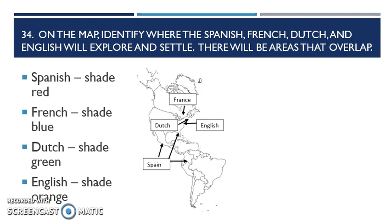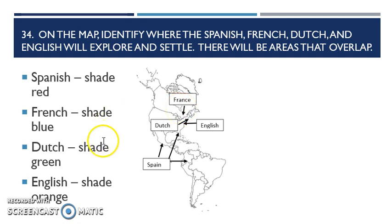Question 34 on the map: identify where the Spanish, French, Dutch, and English will explore and settle, and what areas overlapped. Spain is pretty much Central and South America. Brazil is actually going to be controlled by Portugal. The French are going to be up in blue — pretty much Canada. The Dutch you shade green, and they're like New York, but they call it New Netherlands. England beats them up and takes New Netherlands. The English are going to settle along the North American coastline on the East Coast — not Florida, because Spain still controls Florida.